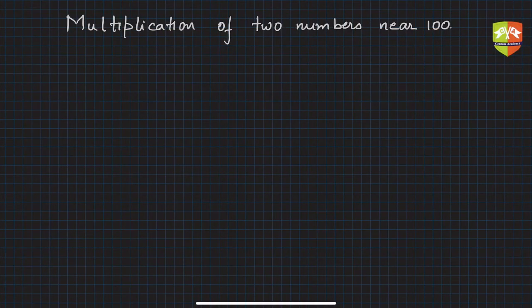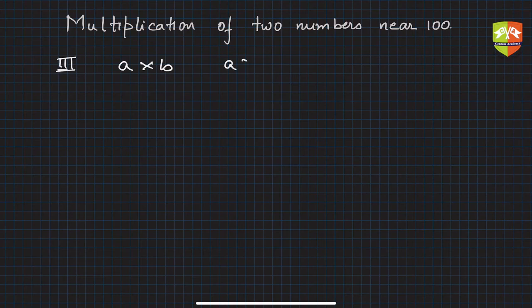Hello and welcome to another session on speed maths. We're learning how to multiply two-digit numbers near 100. In previous sessions, we saw how to multiply numbers just less than 100 or just above 100—both numbers either below or both above 100. In this session, we're taking up case 3, where one number is greater than 100 and the other is less than 100.